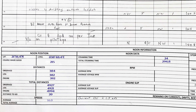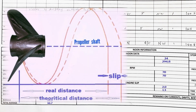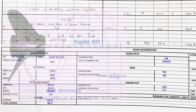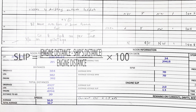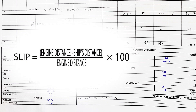Speeds include average from noon to noon and total average. RPM is revolutions per minute of the ship's engine. Engine slip is the difference between the speed of the engine and the actual observed speed of the ship. You can take it from engineers or calculate it with the formula: engine distance minus ship's distance, divided by engine's distance, then multiplied by 100 to get the slip in percentage.